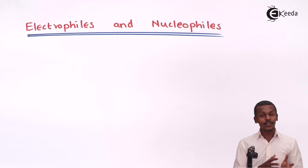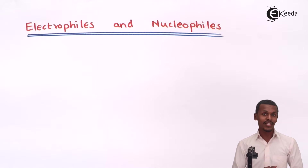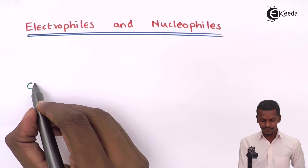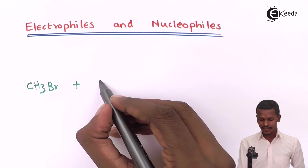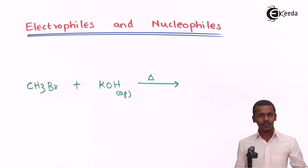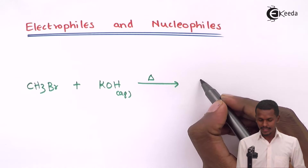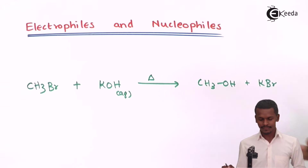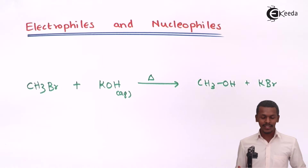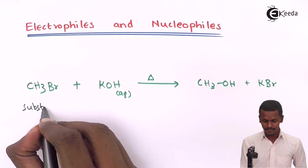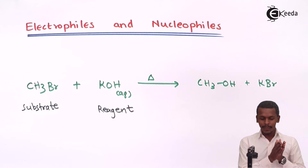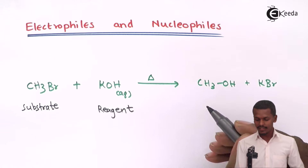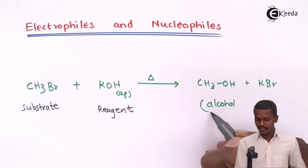Before understanding what Electrophiles and Nucleophiles are, we should understand what reagents are. For example, suppose methyl bromide (CH3Br) is treated with an aqueous solution of KOH — this is essentially the hydrolysis of methyl bromide. The product we get is CH3OH plus KBr. In this case, CH3Br is known as the substrate, while KOH is known as the reagent, and CH3OH is the desired product — methyl alcohol — while KBr is a byproduct.